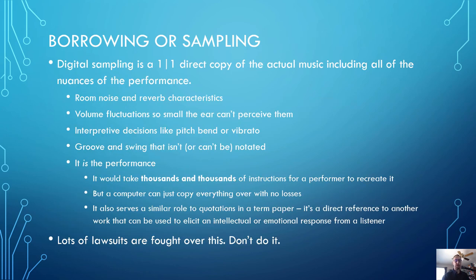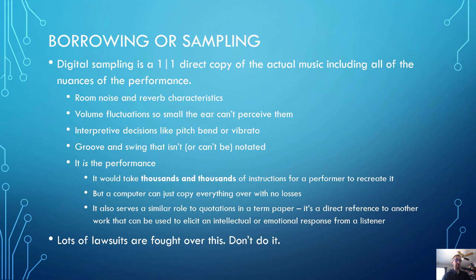Digital sampling, however, is a one-to-one direct copy of the actual music including all performance nuances — things like the sound of the room and its reverb, volume fluctuations too small for the human ear but measurable digitally, interpretive decisions like pitch bend or vibrato, and groove or swing that can't even be notated. It is the actual performance frozen in time and copied. It's similar to quotations in a term paper — a direct reference to another work used to elicit an intellectual or emotional response from a listener or to reinforce a point in your piece.